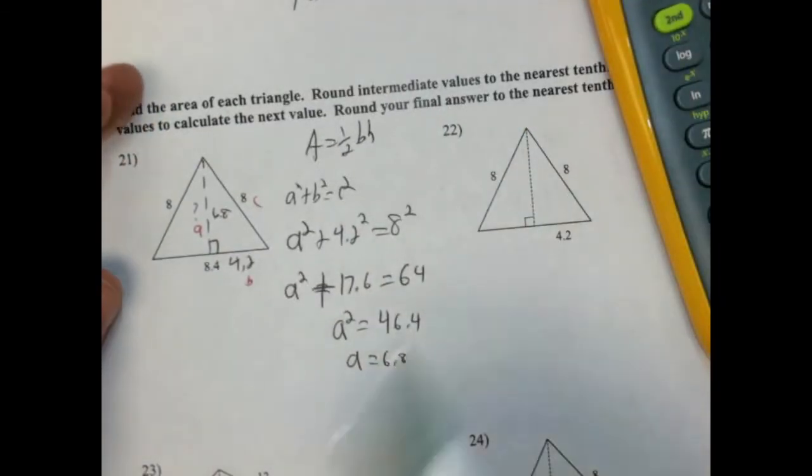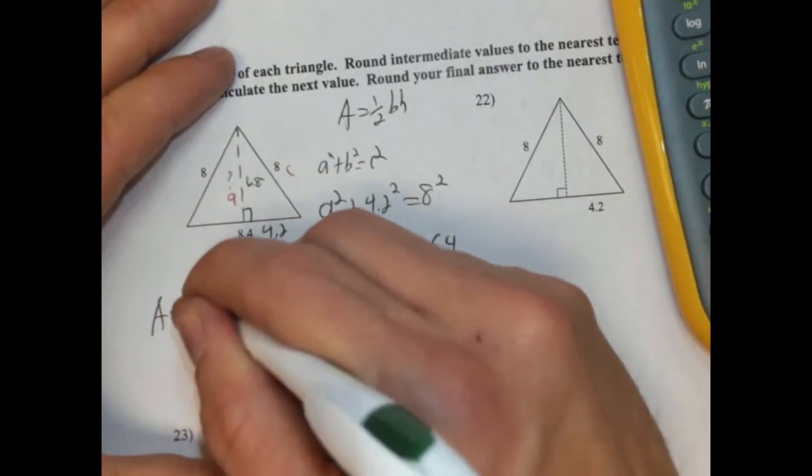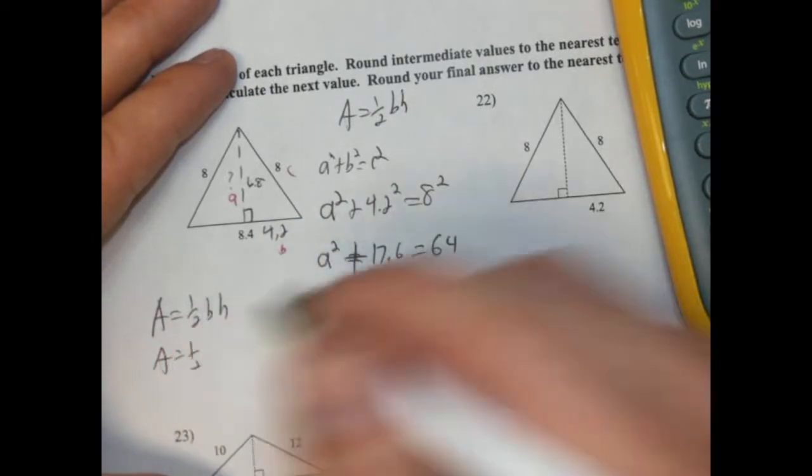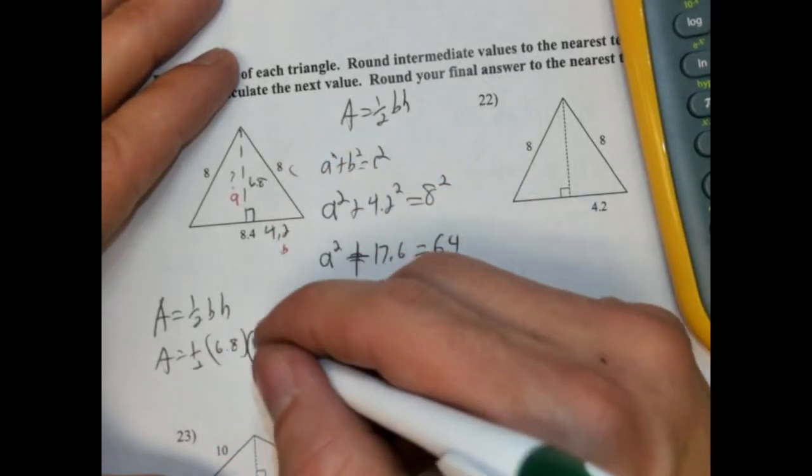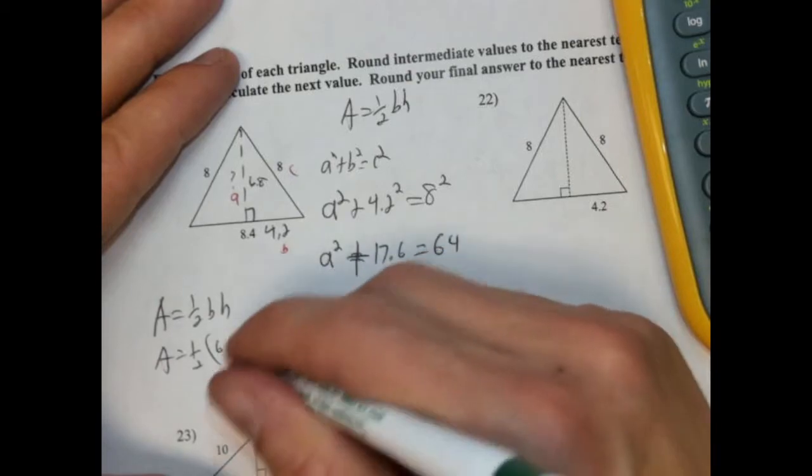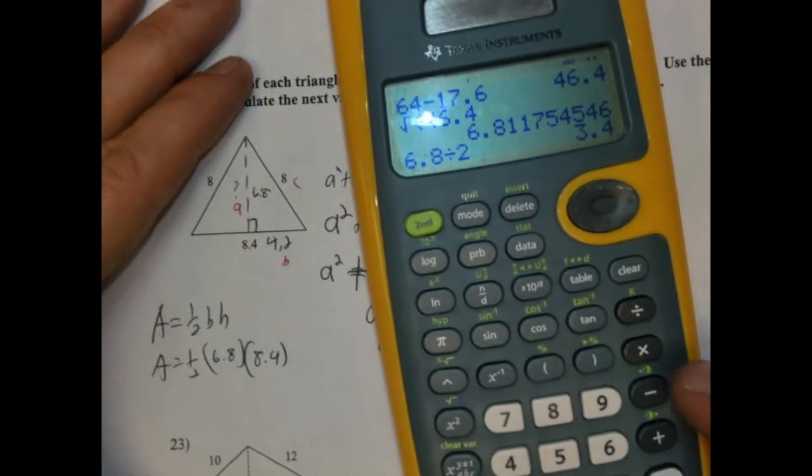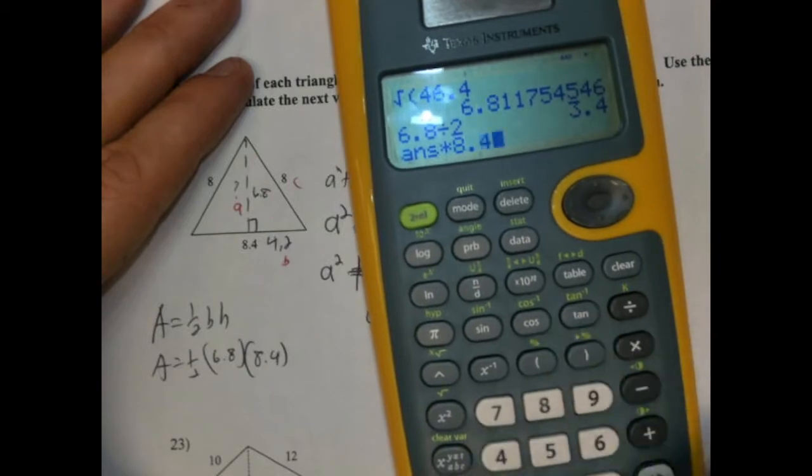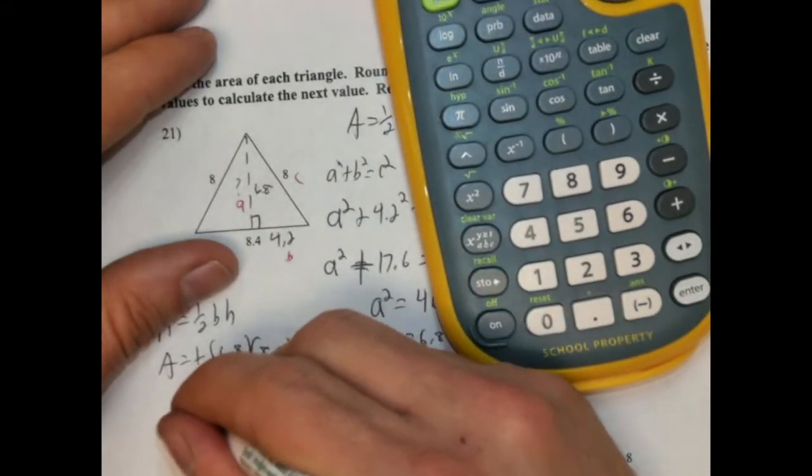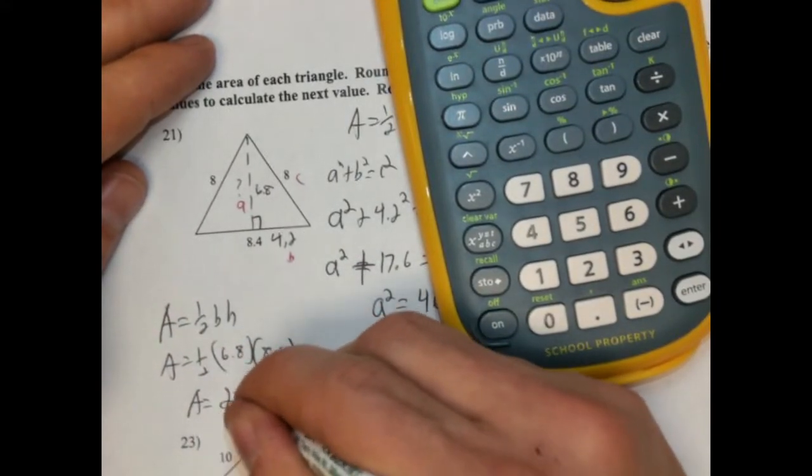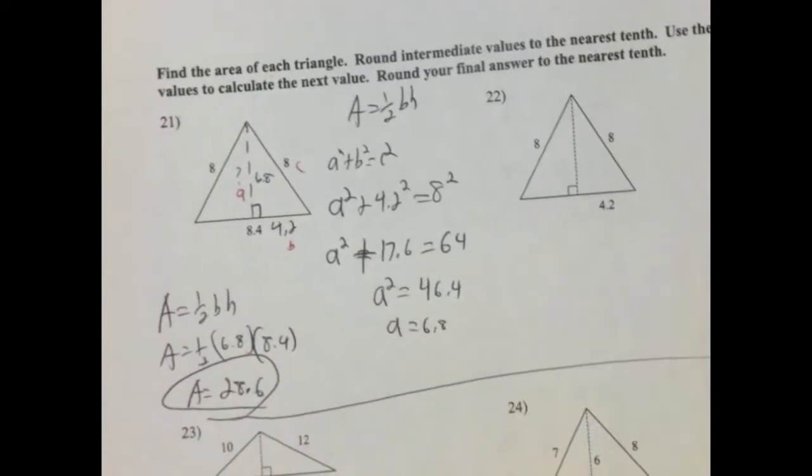So that's going to be our height now. And now we can calculate the area of the triangle. So our base is going to be 8.4. So A equals one-half base times height. So A equals one-half, 8.4 times height. Sorry, that should be our height. It should be over here. 6.8 times 8.4. So 6.8 times one-half is the same as divided by 2, and then multiply it by 8.4. It's 28.56. So it's going to be 28.6 when we round it. So area is going to be 28.6. So we're going to do that one in class. Because I know people that are looking at this are going to be like, how the heck did I do that? So we're going to spend more time in class going over that.